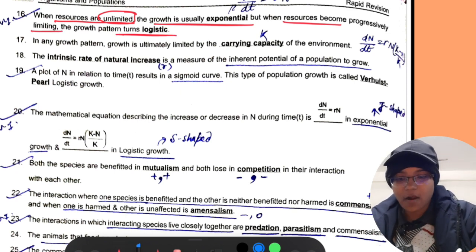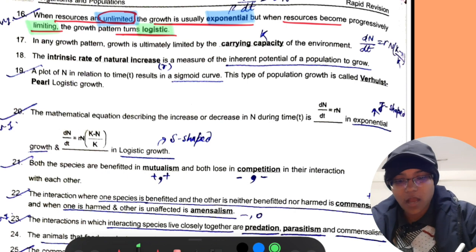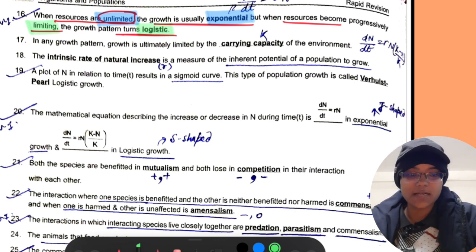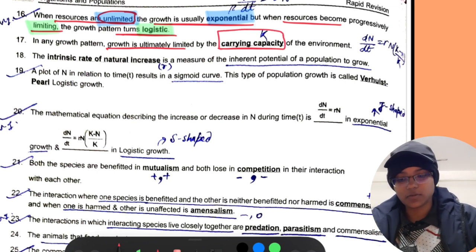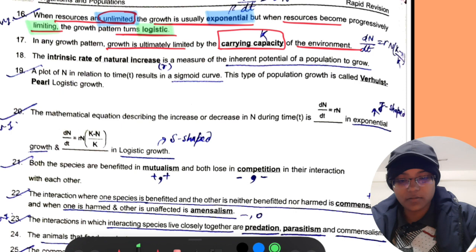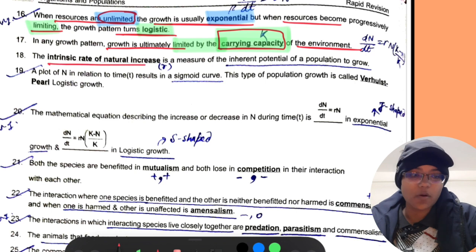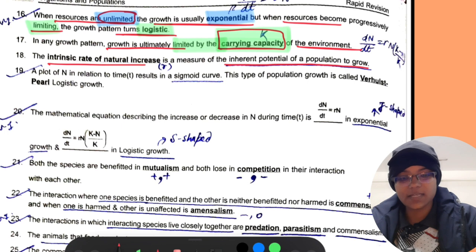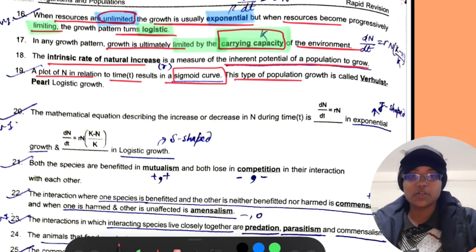When resources are unlimited the growth is exponential, but when the resources become limiting the growth pattern becomes logistic. In any growth pattern, growth is ultimately limited by the carrying capacity denoted by K of the environment.